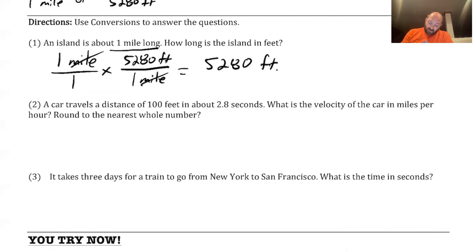A car travels a distance of 100 feet in about 2.8 seconds. What is the velocity of the car in miles per hour? So this is a fun one because we're actually going to be doing 100 feet in 2.8 seconds. I'm going to set up a ratio from the first step there. If I start thinking about this, I want to get into miles and I want to get into hours. There's two conversions I need to do.